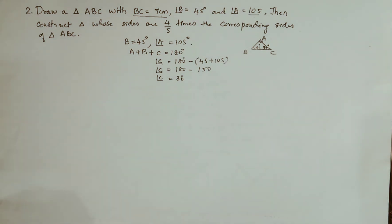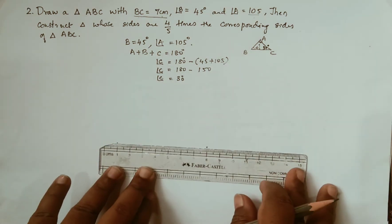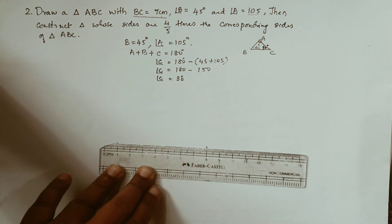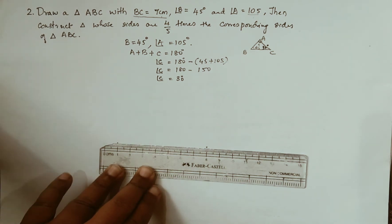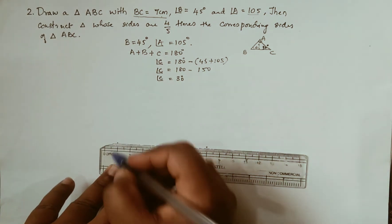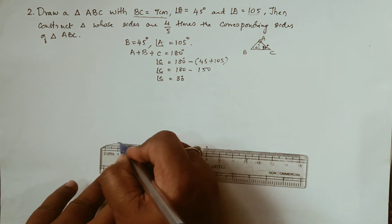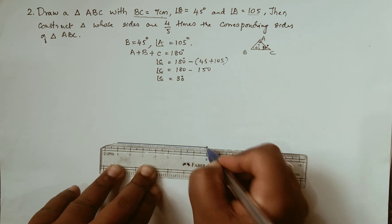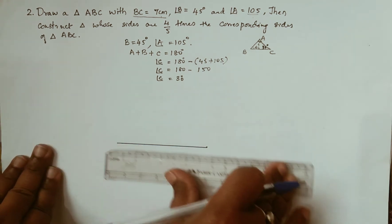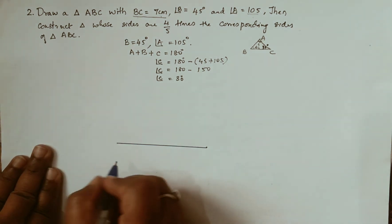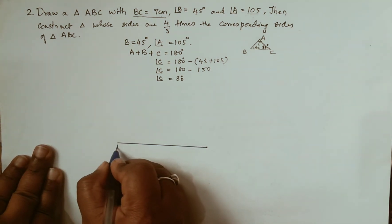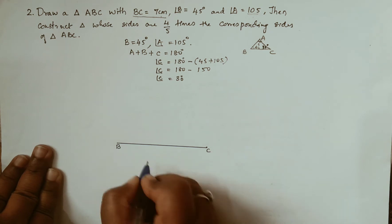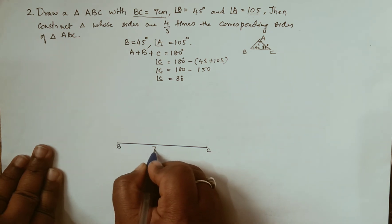Take out your scale. Now we will draw a line of 7 centimeter. You can name this as BC — 7 centimeter. I am using a pen so that it will be clear for you; you can do it in pencil only.